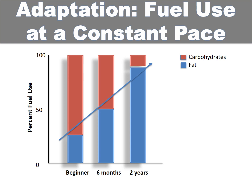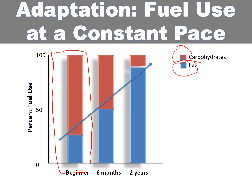Another thing that adapts dramatically with zone two training is fuel use at a constant pace. At six miles per hour as a beginner, we might get around 20 percent of our energy from fat and the rest from carbohydrates. As we continue to train in zone two, by six months we may be at 50 percent fat utilization, and after two years of training at that same six miles per hour we may be up around 80 to 90 percent of our energy coming from fat. It's another adaptation that takes a long time to maximize but is a beneficial result of steady pace running.